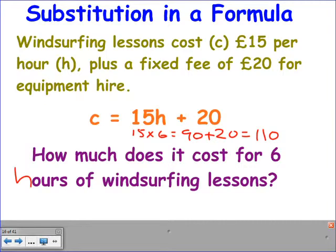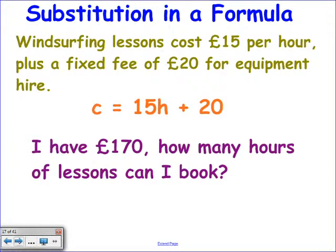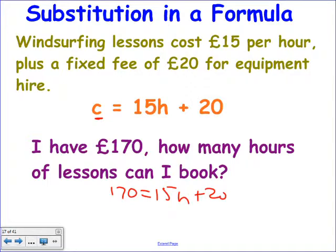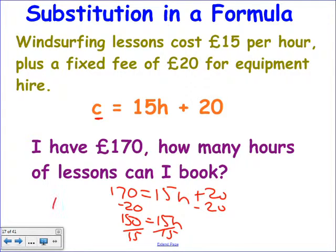To show the other way around: you've just worked out C equals 15H plus 20. But this time they say I've got £170 — how many hours of windsurfing lessons can I get? Substitute 170 for C. Take 20 from both sides: 150 equals 15H. Divide by 15 on both sides: 150 divided by 15 is 10. So I can have 10 hours of lessons.